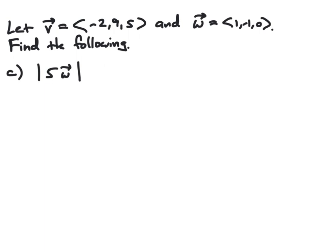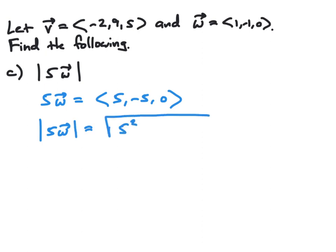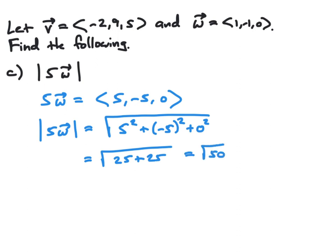For the third part, we want to find the magnitude of 5 times W. We first find the vector 5W by multiplying each component of W by 5, obtaining the component form (5, -5, 0). Then we take the magnitude: the square root of 5 squared plus negative 5 squared plus 0 squared, which is the square root of 25 plus 25, or the square root of 50. This can be simplified to 5 times the square root of 2.